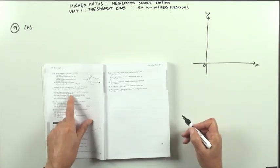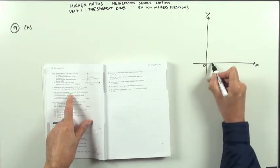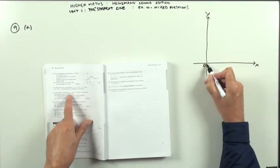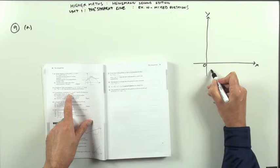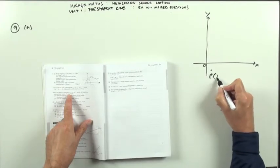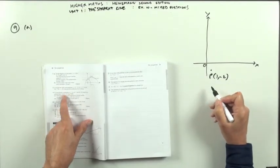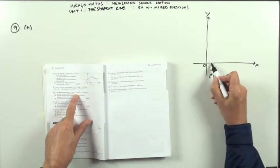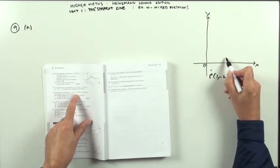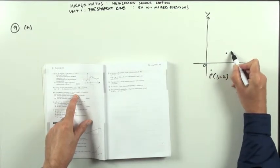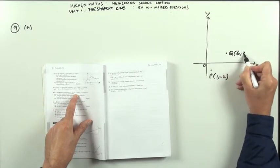P, Q, and R have these coordinates. P is the point (1, -2). Let's put it about there. Q is the point (6, 3). Put (6, 3) about there.